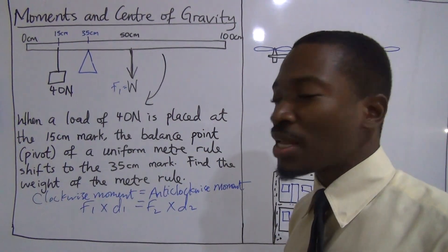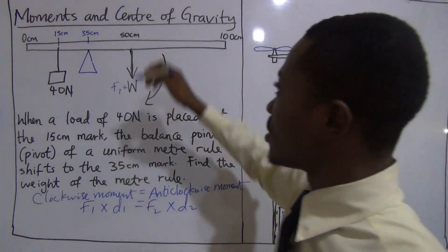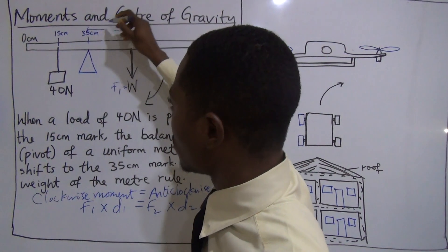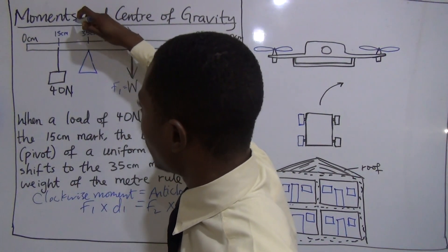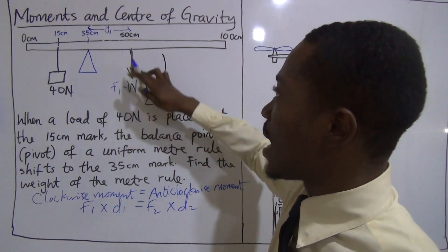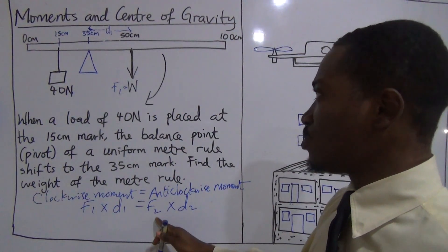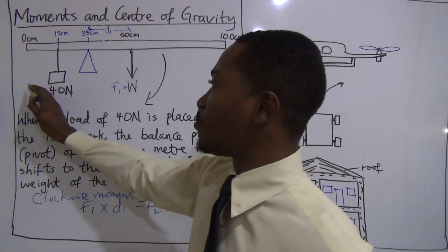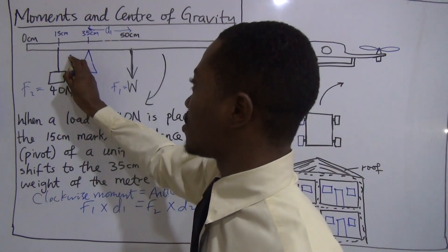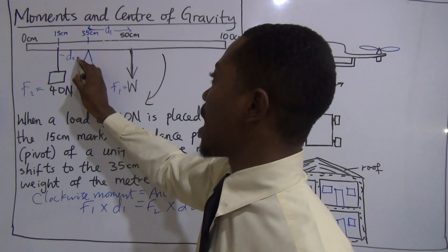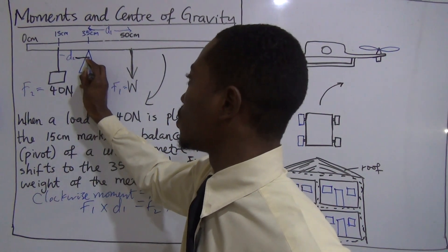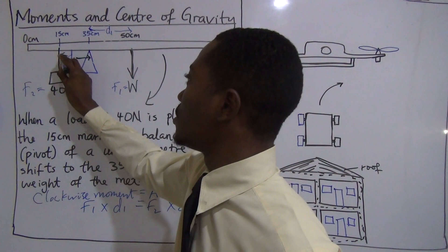Where F1 is the force producing the clockwise moment. So in this case, F1 is the weight of the meter rule. And D1 is the distance producing the clockwise moment. In this case, distance is the distance from this force on the right hand side and the pivot. What of F2? F2 is the force producing the anti-clockwise moment. That's your 40 newton force. What's D2? D2 is the distance between the force F2 and the pivot.